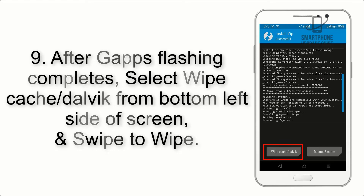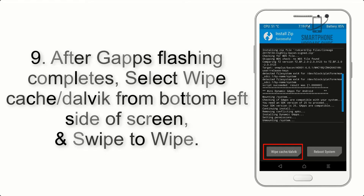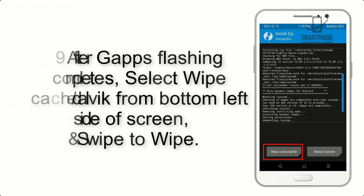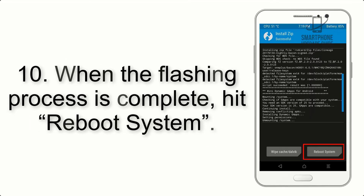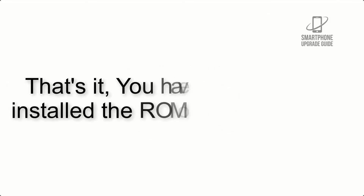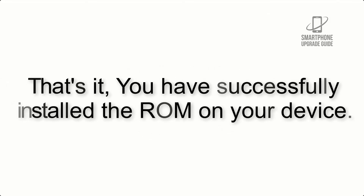Step 9: After Gapps flashing completes, select Wipe Cache and Dalvik from the bottom left side of the screen and swipe to wipe. Step 10: When the flashing process is complete, hit Reboot System. That's it — you have successfully installed the ROM on your device.